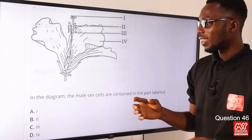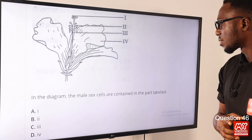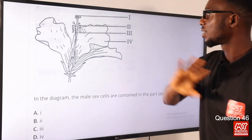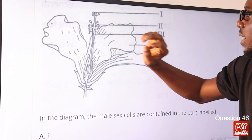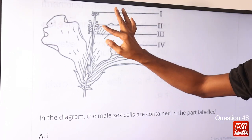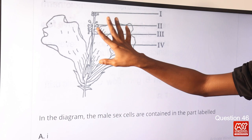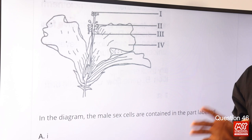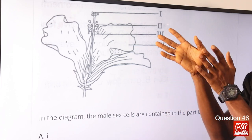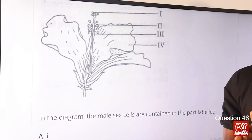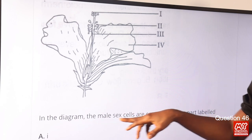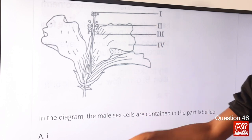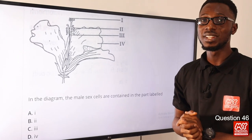Question 46: In the diagram, the male sex cells are contained in the part labeled I, which is the anther on the stamen. The stamen consists of the anther and the filament. It is in the anther that pollen grains mature — this is where male sex cells or gametes are produced. The correct option is option B for structure labeled I.